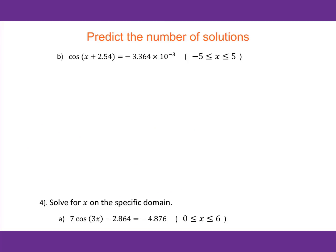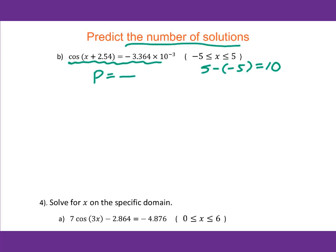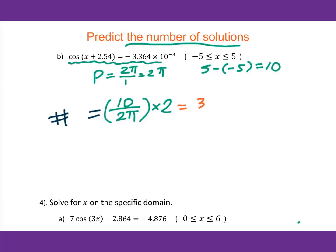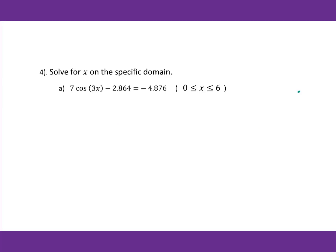Let me explain how to predict the number of solutions for sine and cosine equations. First, get the domain and find the range: 5 minus (−5) equals 10. Then find the period from the equation: 2π over 1 equals 2π. Then compute 10 divided by 2π, times 2 — this gives the number of solutions, approximately 3.18, so there will be 3 or 4 solutions. We already worked this out and got 4 solutions.